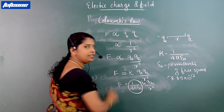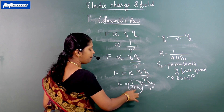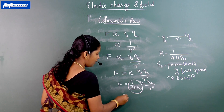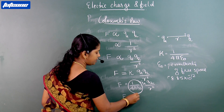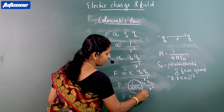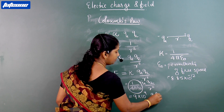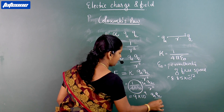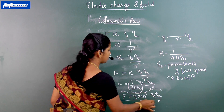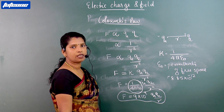On substituting the values of 4π and ε₀, we have F equal to 9 × 10⁹ · Q1·Q2 / R². This is Coulomb's law in electrostatics.